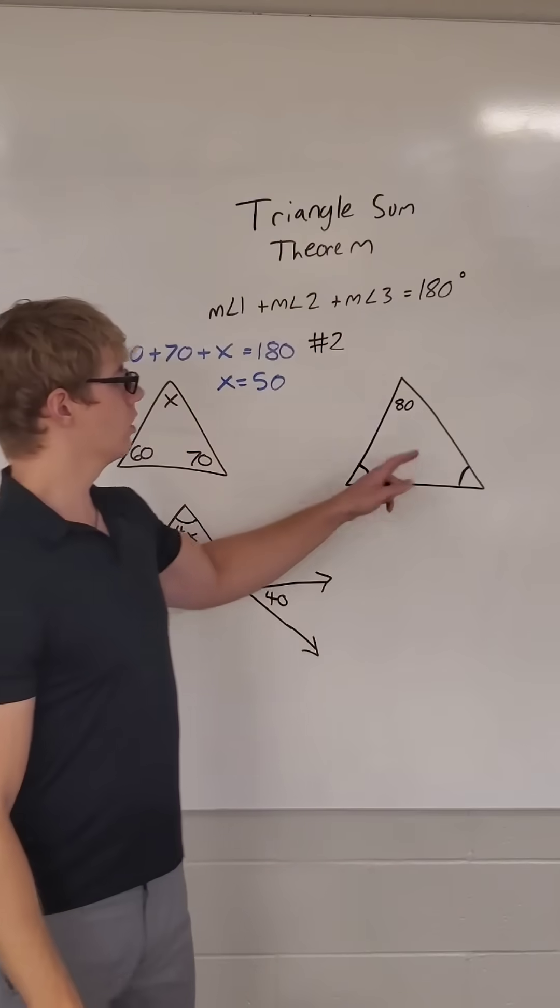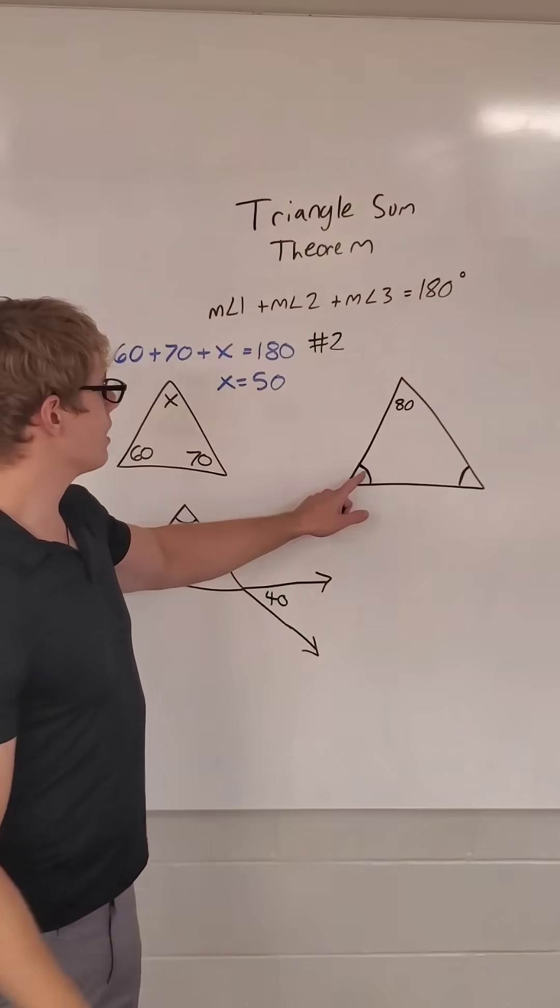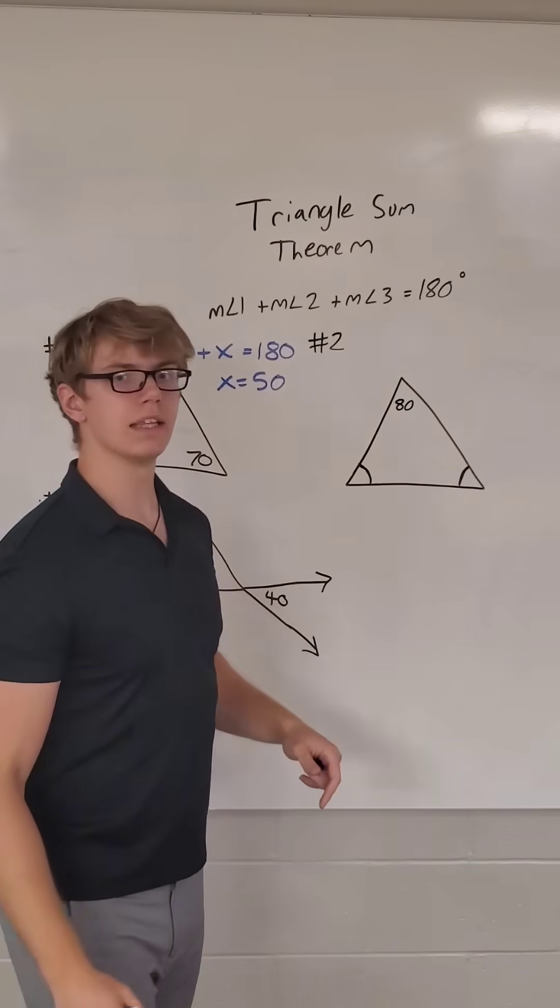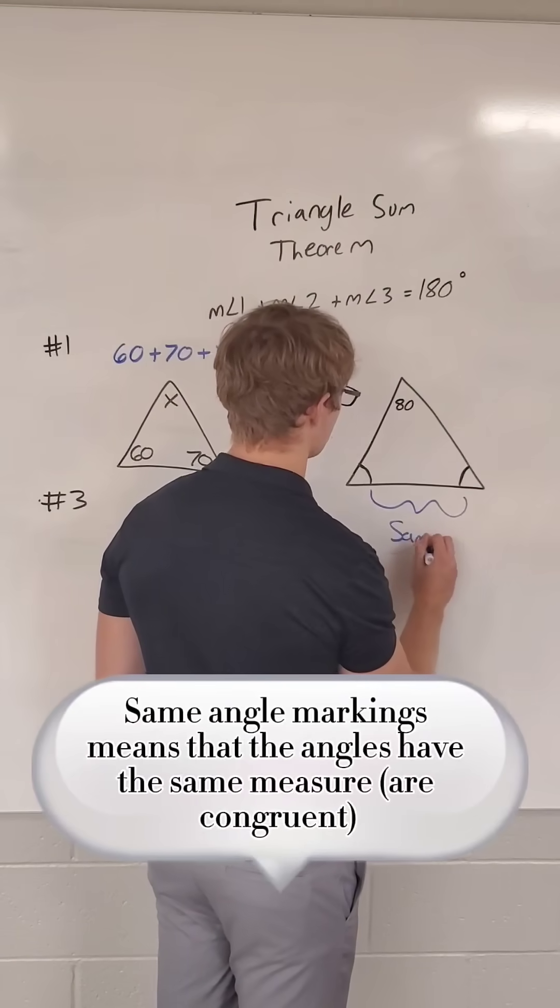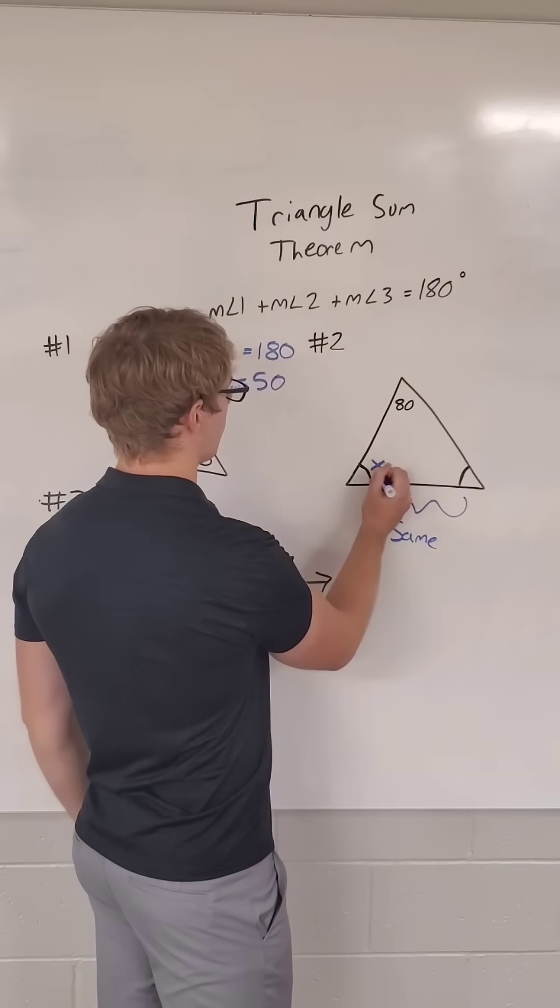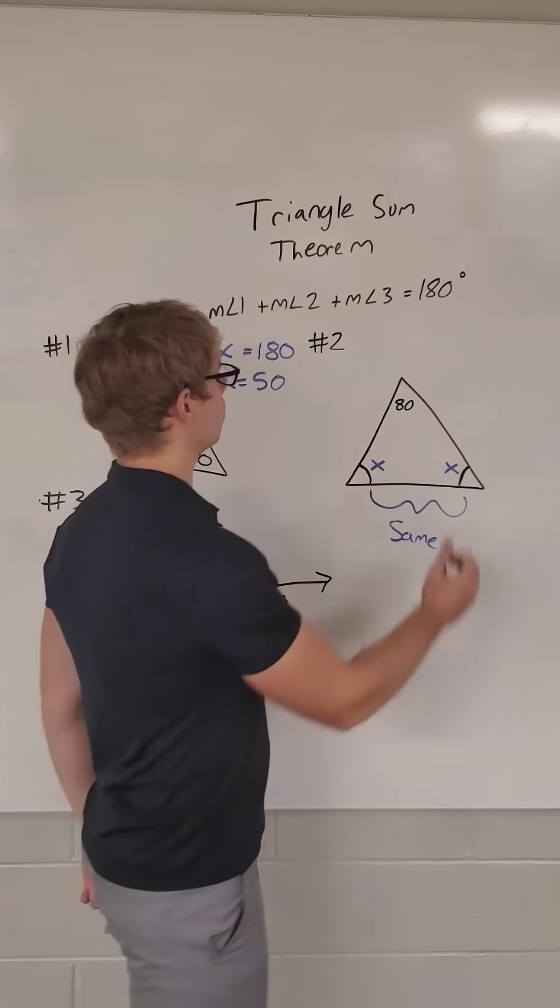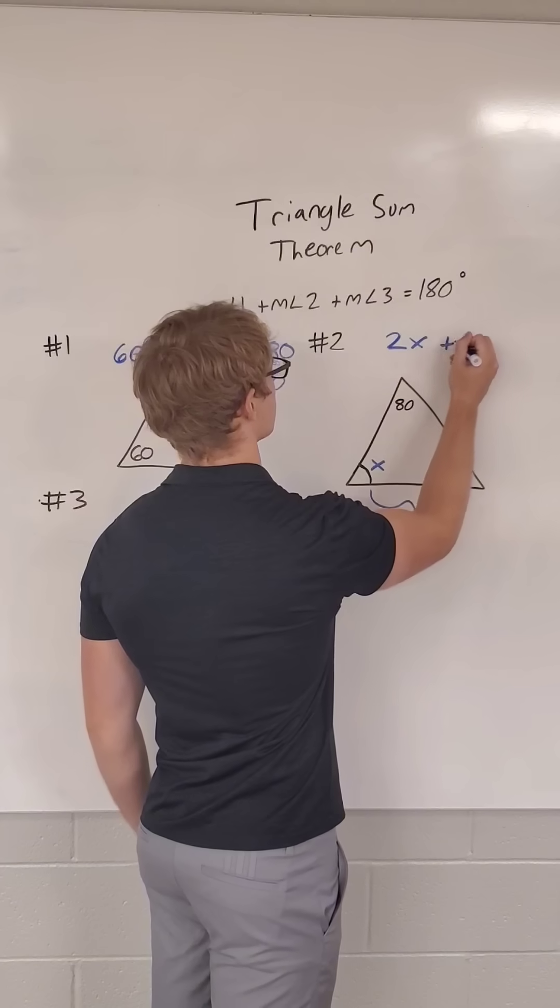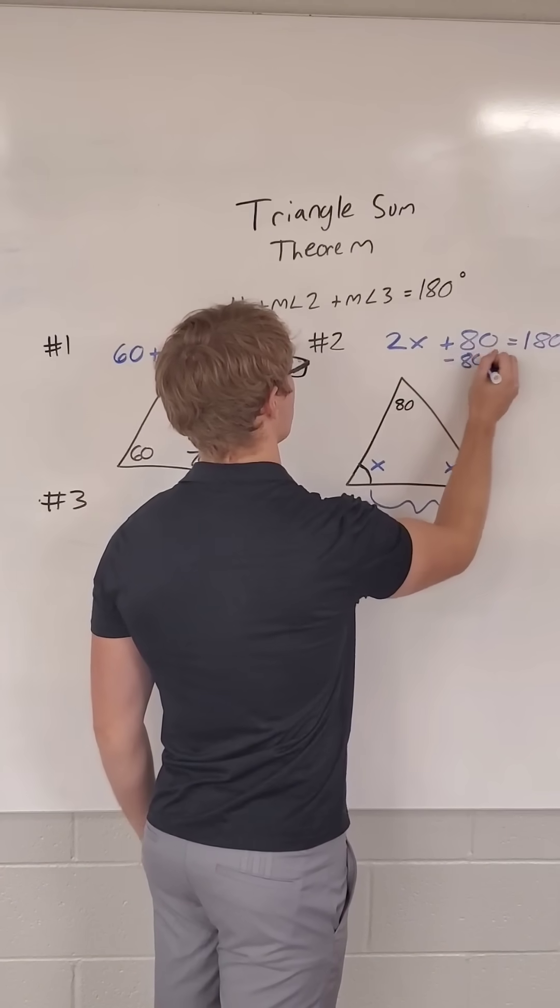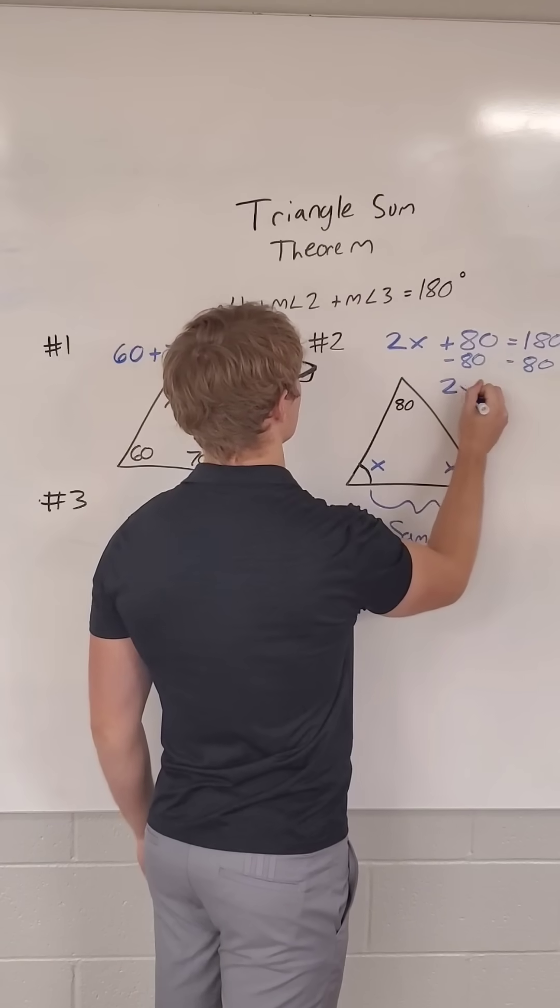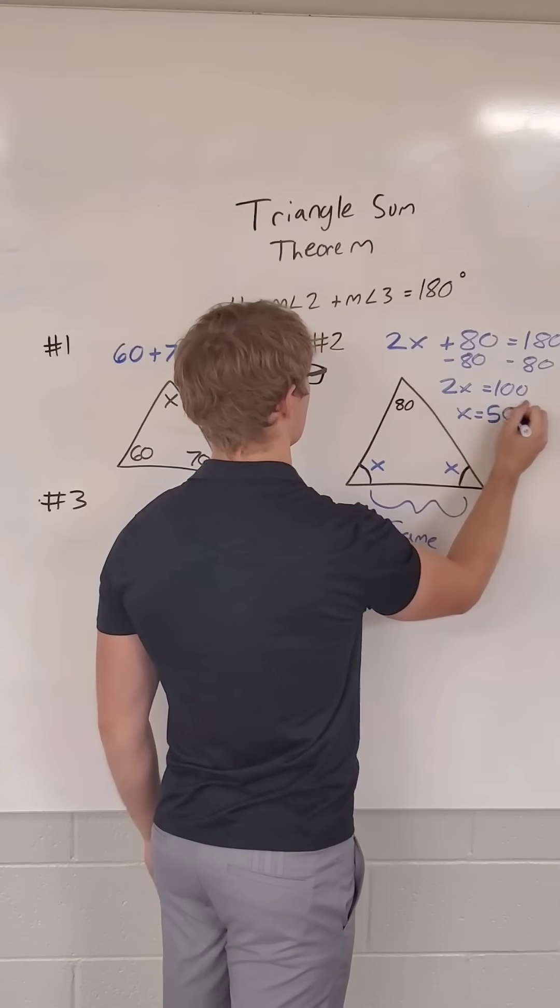Next one, there's a variable. We can always put a variable in there. However, we have these two markings here. These mean that they are the same. They are congruent to each other. So if I put an x here, I should also put an x there. And in that case, when we write our equation, we're going to have 2x plus 80 equals 180. We would subtract 80 from both sides. And we would get that 2x equals 100. And the x is also 50 in this case.